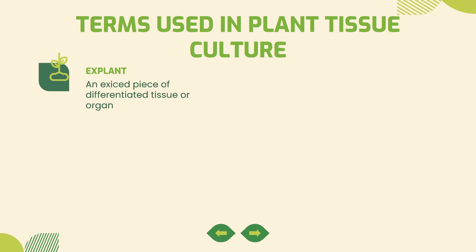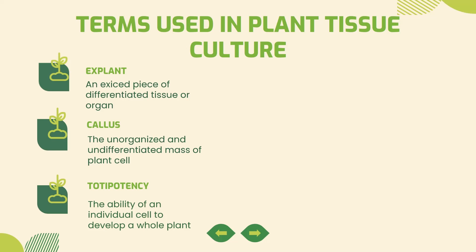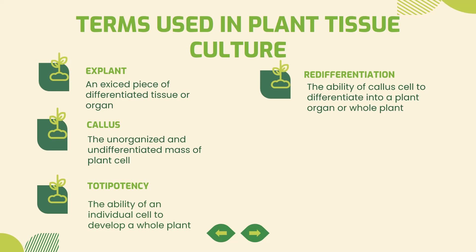Next, Callus — a callus is an undifferentiated mass of cells that develops during the plant tissue culture process. Next, Totipotency — totipotency is the ability of an individual cell to develop into a whole plant. Next, Redifferentiation — redifferentiation is when cells develop into roots and stems again from the callus.